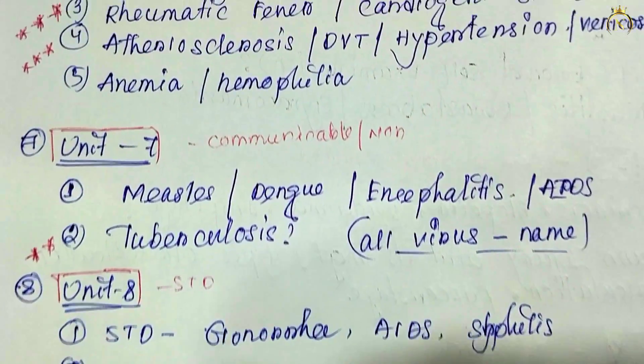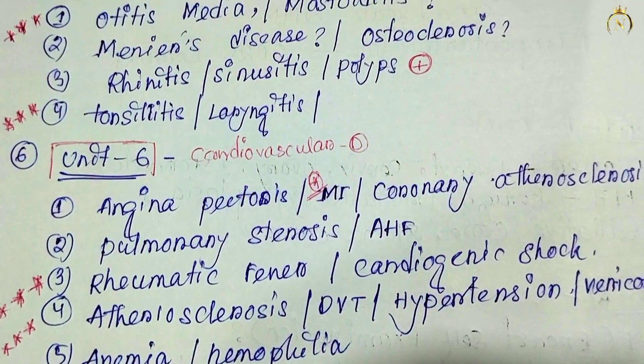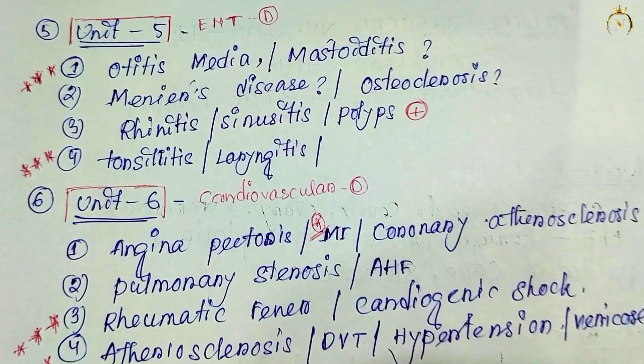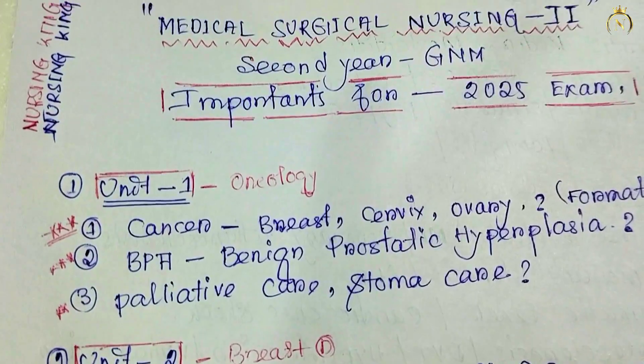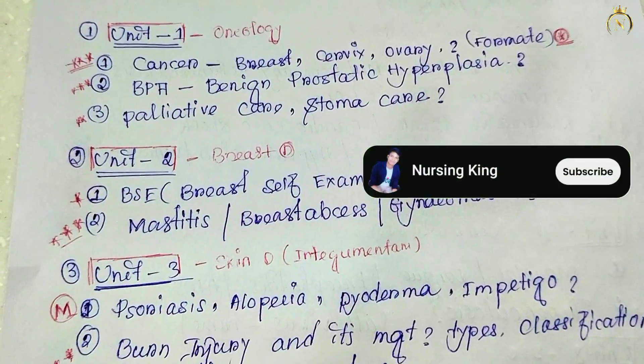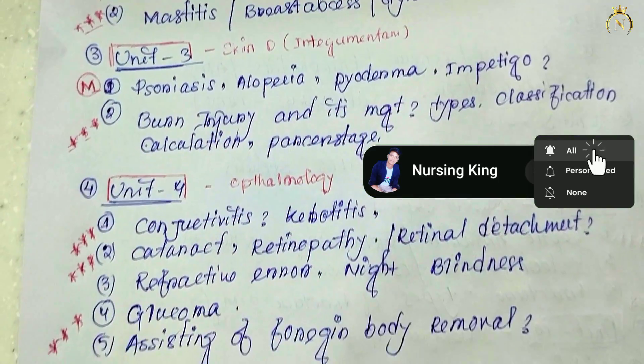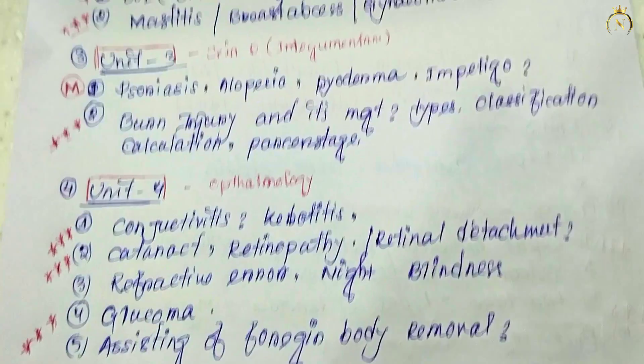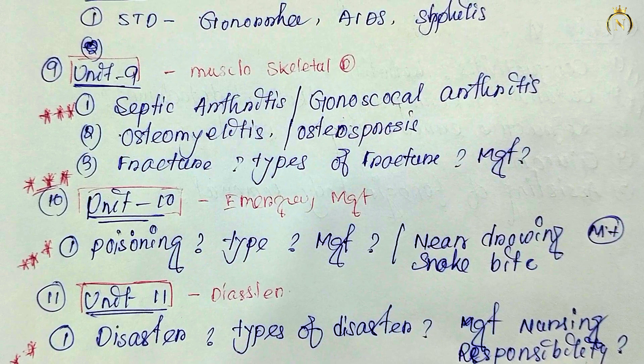I hope if you prepare these questions, a hundred percent common questions will come — best of luck for your exam! Also, Unit 10: poisoning — types of poisoning and management — is most important, along with near-drowning. From Unit 11, there is usually one question, but it comes most of the time in the exam: disaster nursing — types of disasters and nurse's responsibility in disaster. Please like and subscribe to my channel.